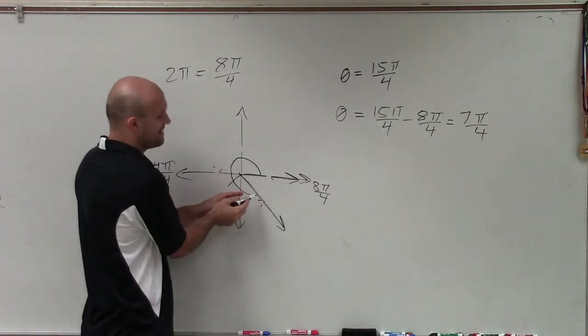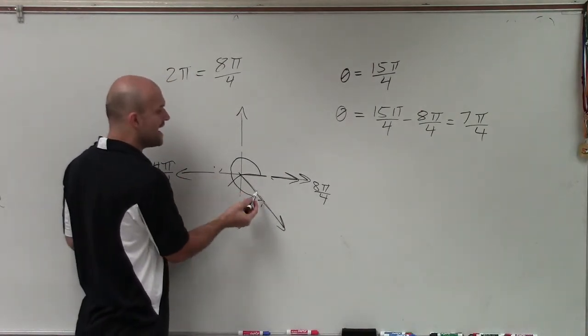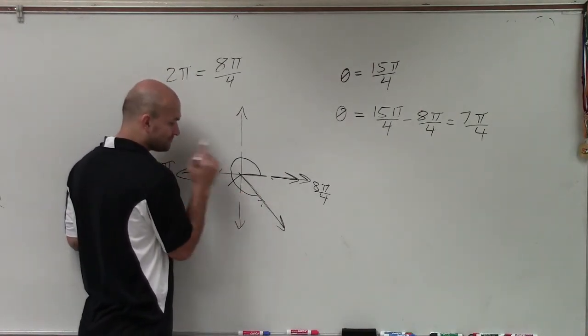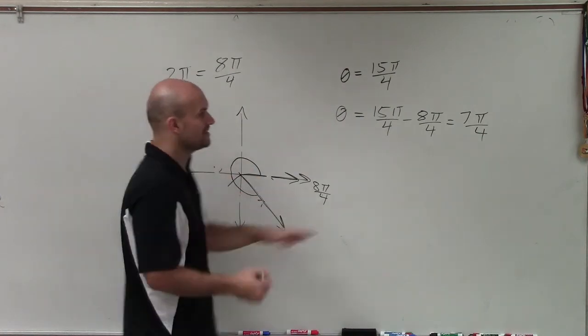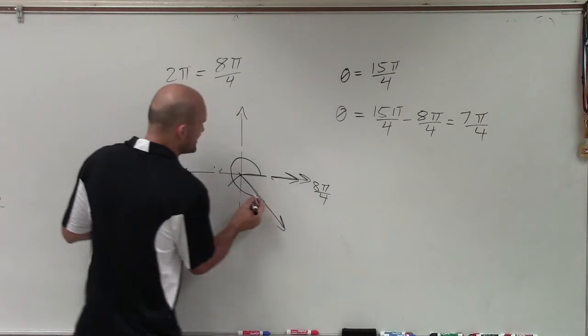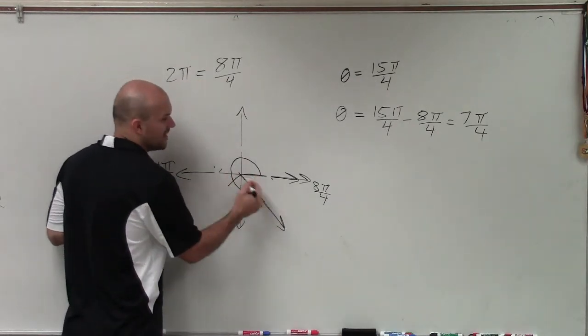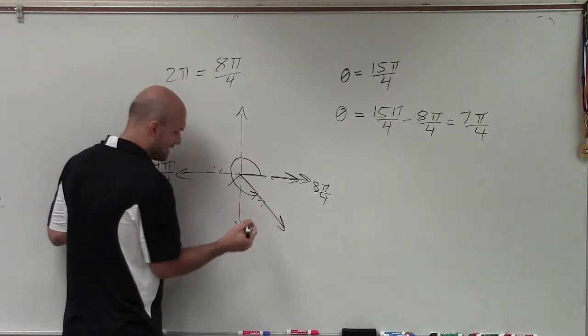So that is that angle, 7 pi over 4. However, now let's go ahead and what about if I subtract 2 pi again? Right? Because now this is going to be the smallest positive angle that's going to still have the same initial and terminal side.